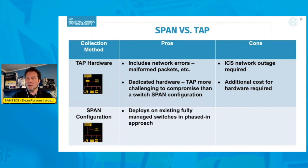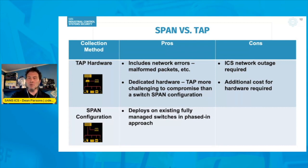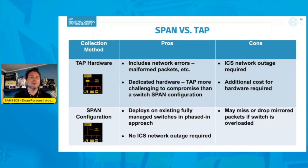Switching over to a SPAN configuration — deploying can be as easy as just reconfiguring a fully managed switch you may already have inside your control environment. A lot of times during assessments, organizations have some capability for a SPAN configuration already in place; it just needs to be enabled in a phased approach. Another pro is that no ICS network outage is required, unlike a TAP.